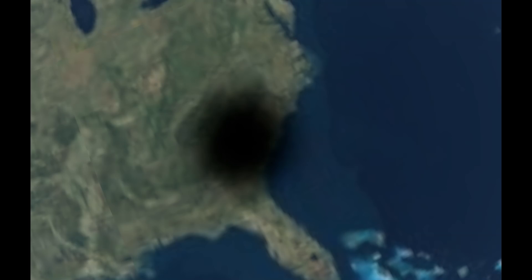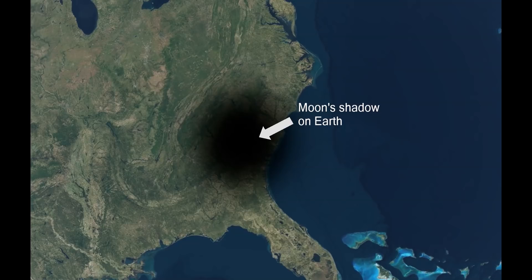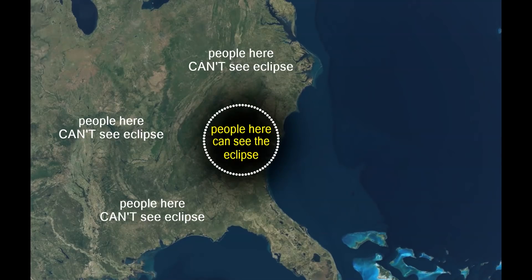It is rare to see solar eclipses because only a small part of the earth is completely covered by the moon's shadow. Anyone outside this shadowed area would not see the eclipse.